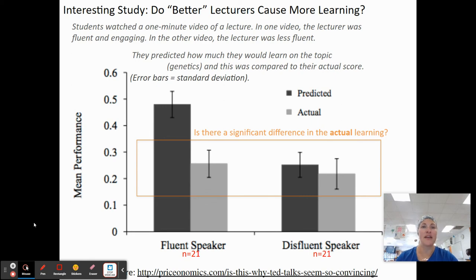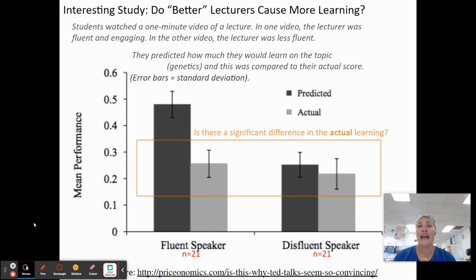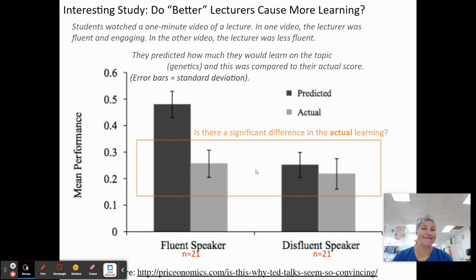This is an interesting study based on real research. Students watched a one-minute video of a lecture — in one version the lecture was fluent and engaging, and in the second it was less fluent. The question: do students really do better if the teacher is more engaging? The predicted result was that a fluent, eloquent speaker would lead to better learning, while a disfluent speaker would lead to less learning. However, they learned about the same, and especially with these error bars overlapping quite a bit, it doesn't really matter if your teacher is very engaging or kind of dry.